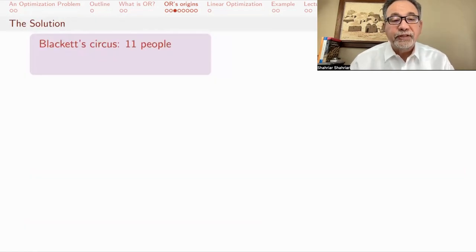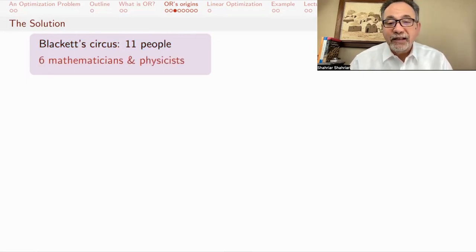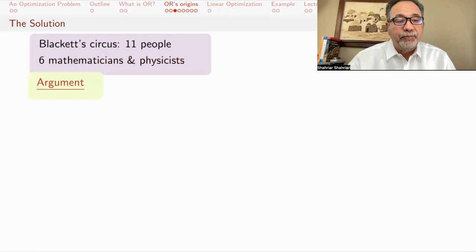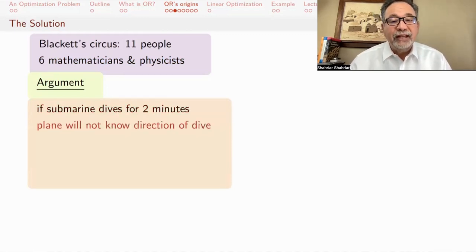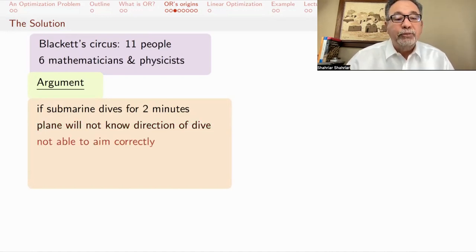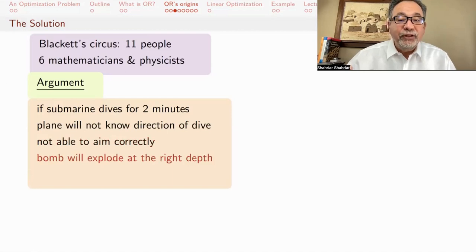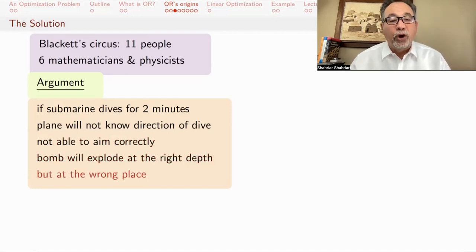They brought together a group of scientists, and they nicknamed it Blackett's Circus. It involved all kinds of people. Six of them were mathematicians and physicists. I think three of them were biologists. There was a surveyor, and there was an army officer also, and gave them this problem. These guys thought about it, and they came forth with the following argument. They said that if the submarine dives for two minutes, then it will go down a hundred feet, but we don't know which direction it'll go. It could go in any one of the directions, and the plane wouldn't really know which way it went. Even though the bomb will explode at the right depth, it will be at the wrong place.